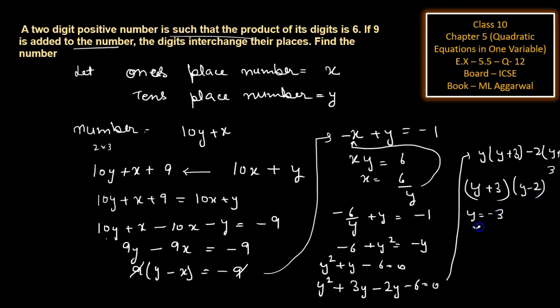So y is equal to minus 3 and y is equal to 2. You can see that this one is negative term, so it can be neglected because in this question we have given that two positive numbers. So y is equal to 2.